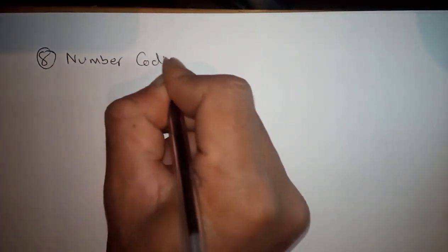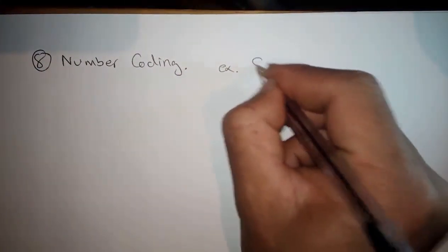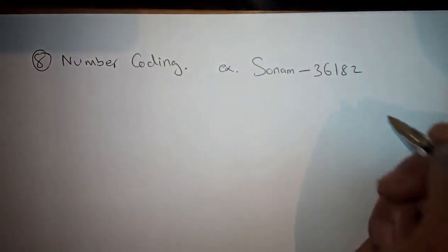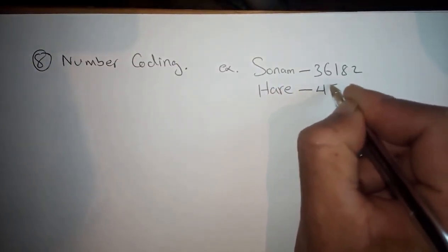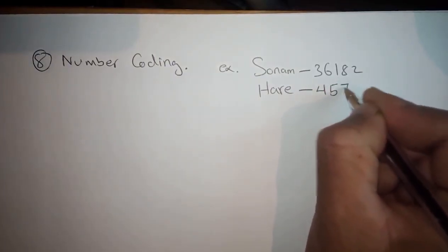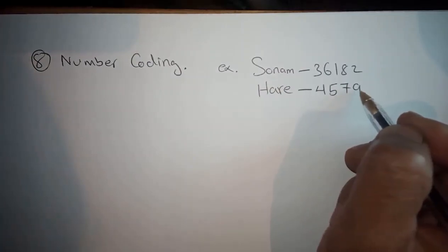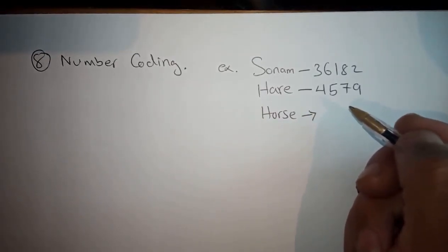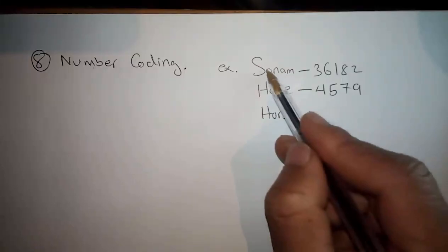The eighth type is Number Coding. For example, if Sonam (S, O, N, A, M) is coded as three, six, one, eight, two, and Harry is coded as four, five, seven, nine, then how will Horse be coded? This type of question will also be there. Sonam has certain numbers given to each alphabet.